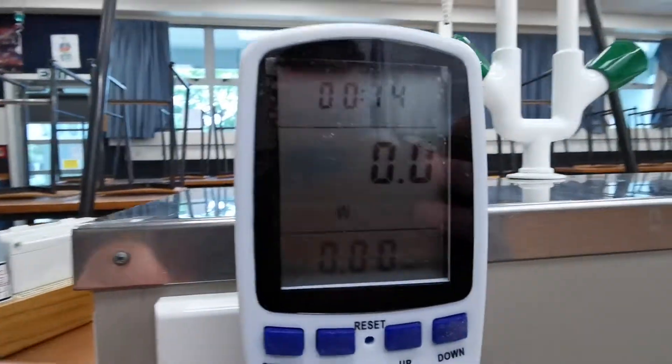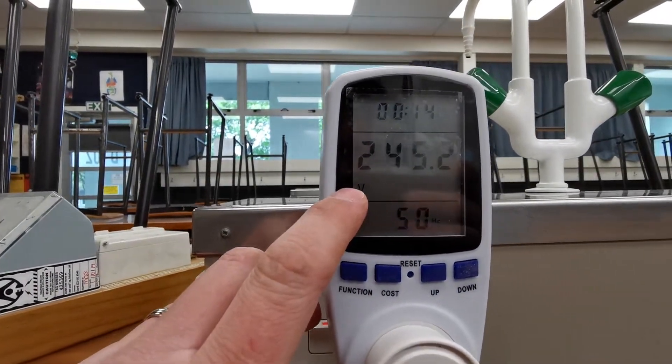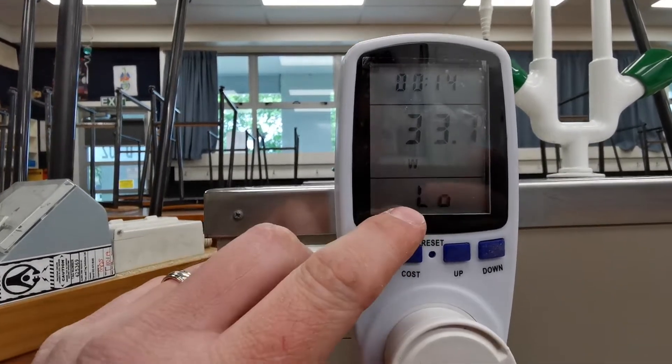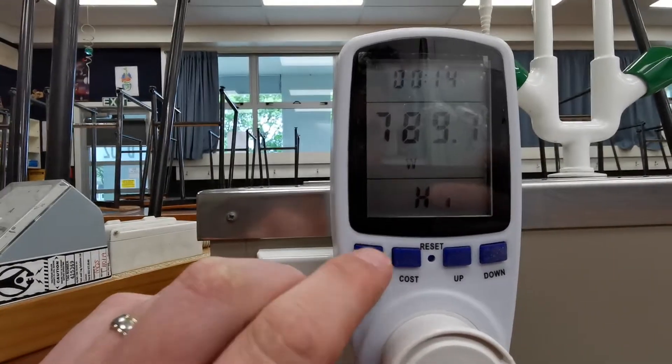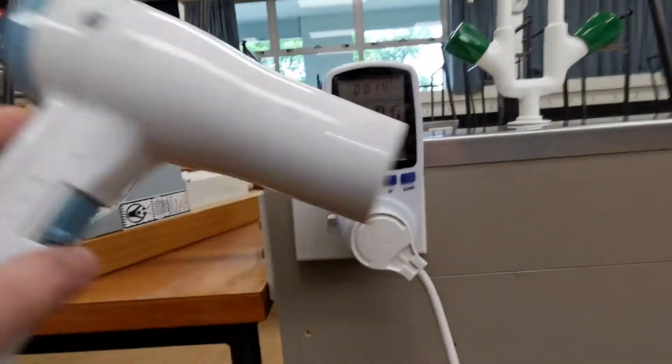And you'll see that it says W. If you push the little function button it says kilowatt-hours, that's total amount of power, voltage is the current voltage of the plug, amount of current, the lowest watts, the highest watts, no reading, and then watts. So you just want it on the watt setting.